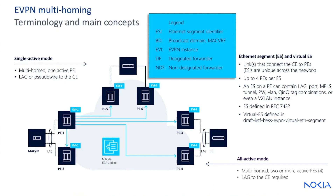An Ethernet segment can have up to four PEs per ES, and an ES on a PE can contain a LAG port, MPLS tunnel, pseudowire, VLAN, Q-in-Q tag combinations, or even a VXLAN instance. The ES is defined in RFC 7432, BGP MPLS-based Ethernet VPN, and the virtual ES is defined in DraftBest EVPN virtual Ethernet segment.